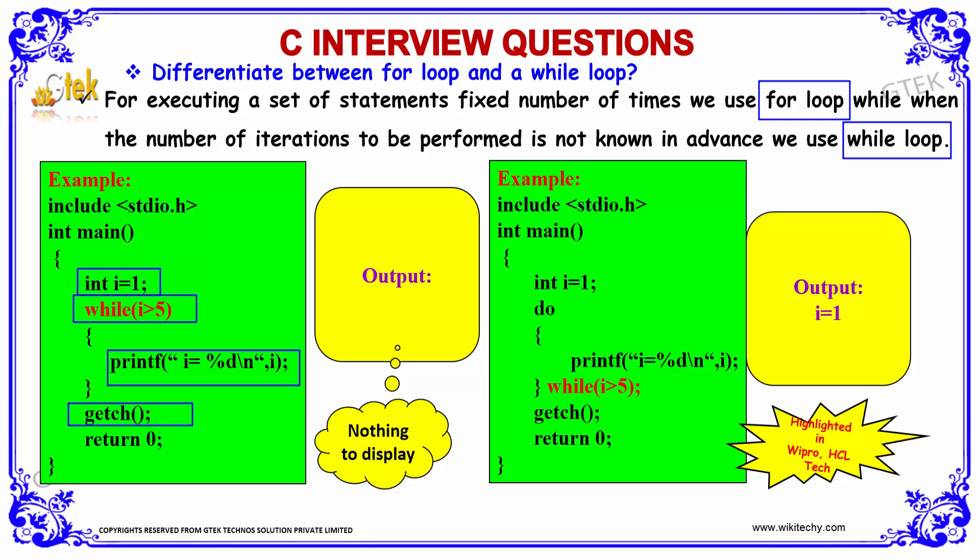Whereas, if we have a comparison for the for loop statement, the declaration of header file, followed by the main, int i equal to 1, do, printf, and after that we have the while statement.